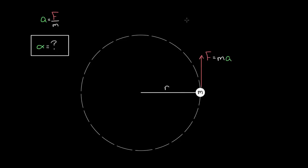The torque from a force is gonna be equal to the force exerting that torque times R — the distance from the axis to the point where the force is applied. In this case, that's the entire radius because we applied this force all the way at the edge. The angle between F and R is 90 degrees, and sine of 90 degrees is just one, so we can get rid of that. The torque exerted by this force F is gonna be F times R.